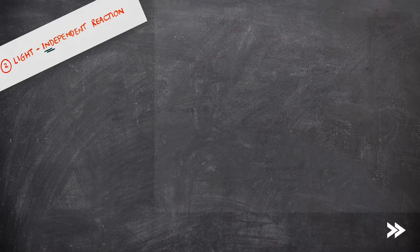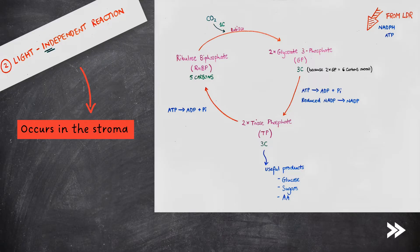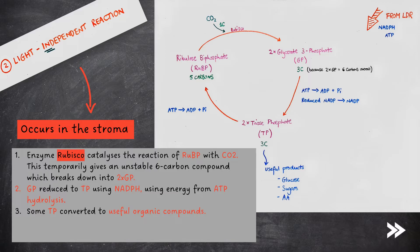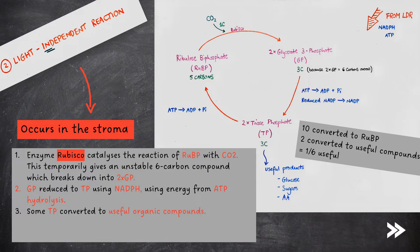So next we have the light independent reaction. This occurs in the stroma. First the enzyme Rubisco catalyzes the reaction of RUBP with CO2. This temporarily gives an unstable 6 carbon compound which breaks down into two GP molecules. GP is then reduced to TP using NADPH using energy from ATP hydrolysis. Next some of the TP molecules are converted into useful organic compounds such as glucose, sugars and amino acids. Note that in one cycle 10 of the triose phosphate molecules are converted back into RUBP whereas two TP molecules are converted into useful compounds. Therefore only one sixth of the TP molecules are converted into useful compounds in one cycle.